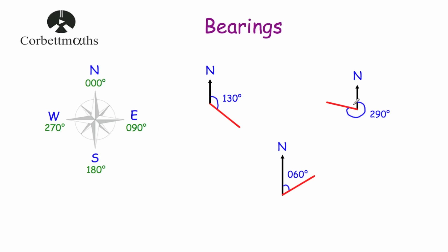So in this diagram, if we wanted to find the bearing of this direction, again we would draw our north line and we would measure the angle clockwise from north. So that would be 290 degrees. And if we wanted to find the bearing of this direction of travel, again we would measure the angle clockwise from north. In this case it would be 60 degrees, but bearings are given as three figures. So if it's less than 100, you put a zero in front, so it would be 060 degrees.